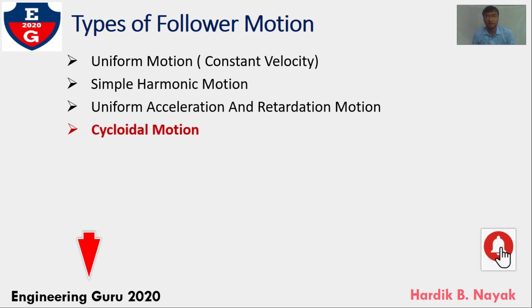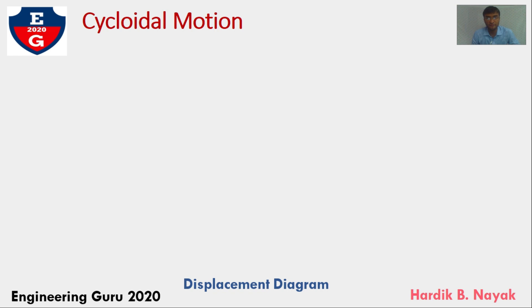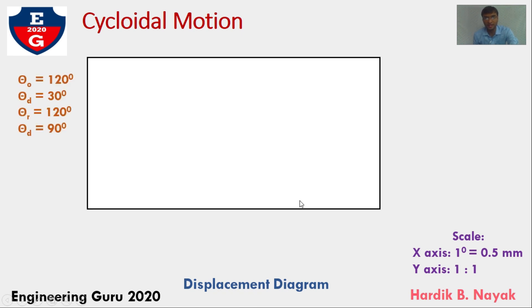Now here, we will learn displacement diagram for cycloidal motion. I will share one technique for drawing displacement diagram of cycloidal motion. I would be assuming some data. First assuming scale for x-axis 1 degree equal to 0.5 mm, y-axis equal to 1:1. Now, draw one rectangle from given data, assuming linear displacement or lift of the follower on y-axis and x-axis angular displacement.